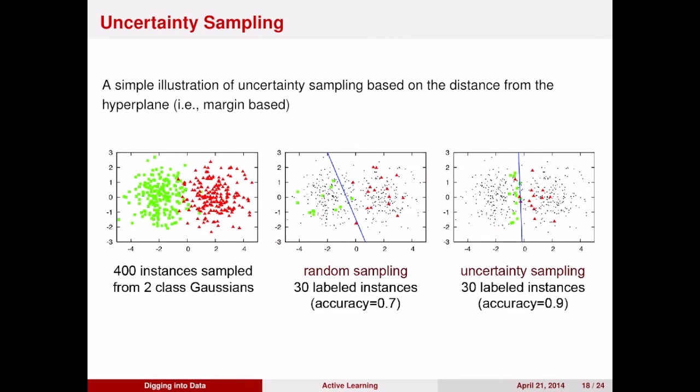If you do uncertainty sampling, you can much more quickly figure out what your decision boundary is. So on the left, we have the true class labels. In the center, we have what happens if you do random sampling with 30 examples. You get a much worse division between your data because you're not looking at the hard cases. You're looking at all cases. On the right, we have what happens if you look at only the hard cases and you do uncertainty sampling. You get a much better accuracy, and this happens because you're paying attention to the part of the space that is most difficult to distinguish.